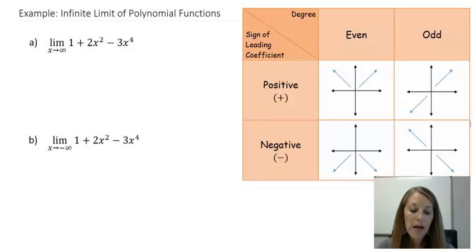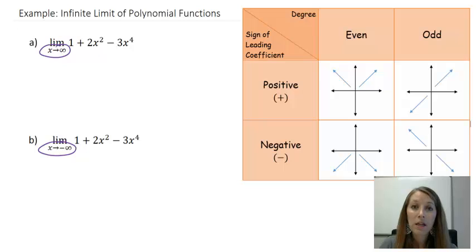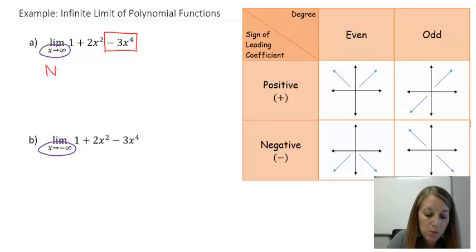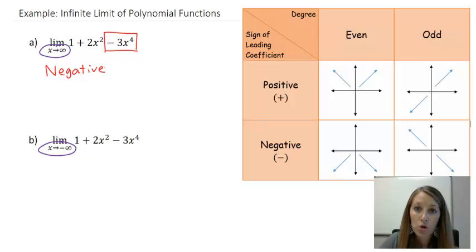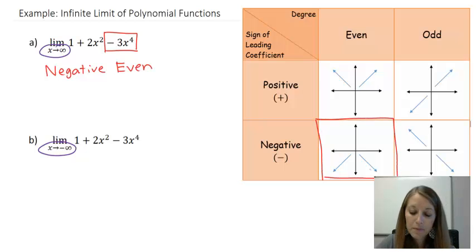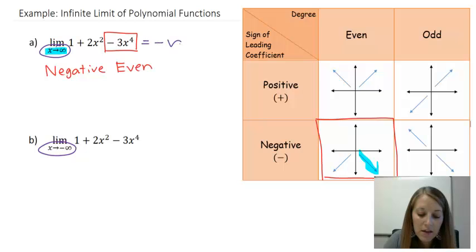Let's do an example: the function 1 + 2x² − 3x⁴. We want the limit as x approaches positive infinity and as x approaches negative infinity. We pick out the leading term — the term with the highest degree — which is −3x⁴. The coefficient is negative 3, and the exponent 4 is even, so this is a negative even. Looking at the chart, when x approaches positive infinity (the right-hand side of the graph), the graph goes down forever, so the answer is negative infinity.